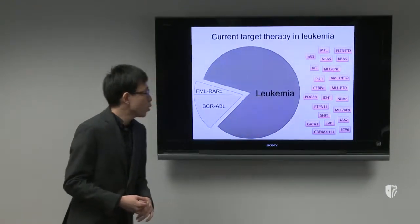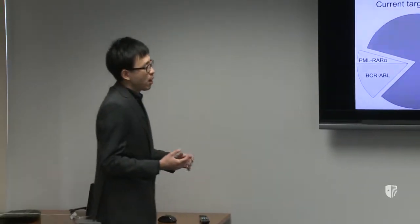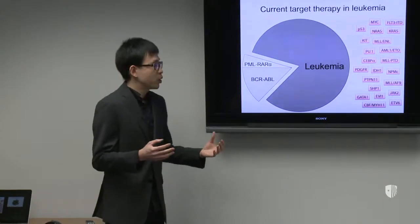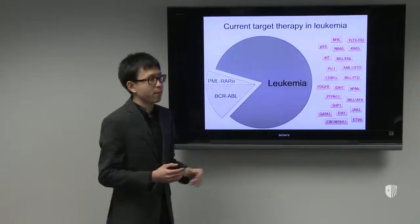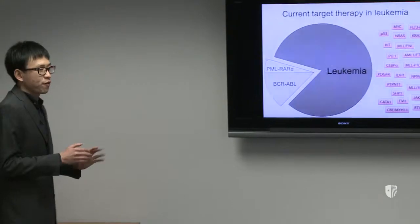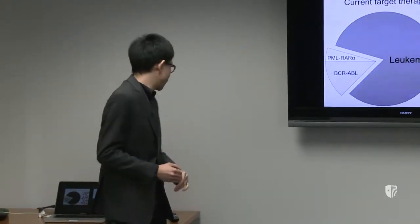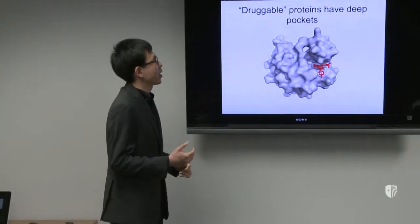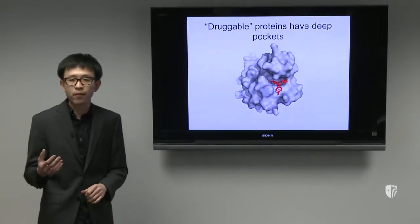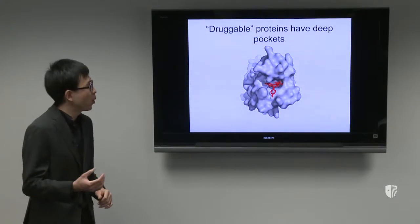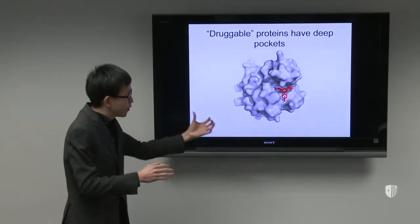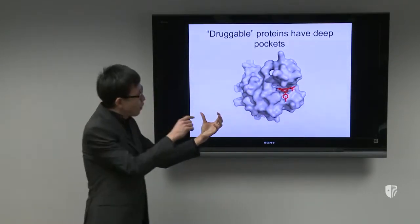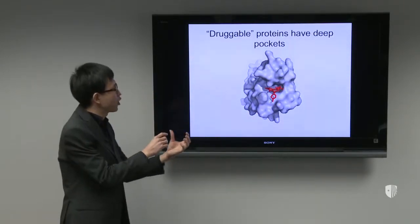So today I'm talking about finding new targets against the rest of this leukemia — not all of them, but we want to use this as a proof of principle. When we talk about finding a target, usually the proteins that can be targeted by a chemical probe — so-called 'druggable proteins' — usually have a surface structure with a pocket, and you can fit a chemical inside the pocket to inhibit the protein's function.